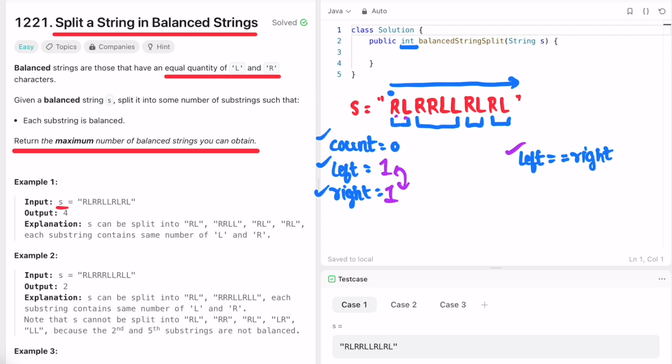So let's go further. We see an R, so increment right. We see an R, so increment right again. We see an L, so increment left. We see an L, so increment left again. Again, this condition is satisfying because left and right are equal to three, so increment count.